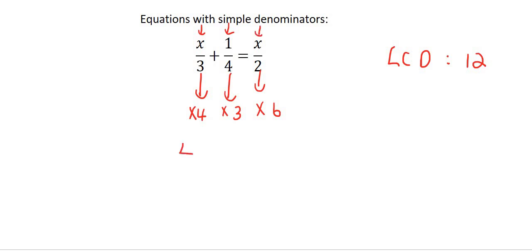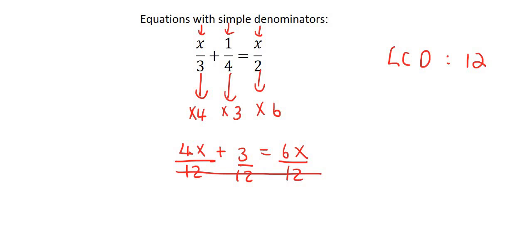So it becomes 4x plus three equals 6x. You don't have to put the denominators there, even though there would have been 12. We can actually just ignore those. How come? Because we are busy with an equation. When you have denominators that are the same and it's an equation, then you can ignore them.